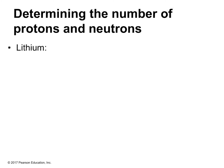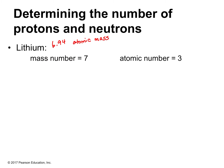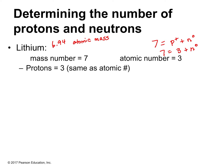Let's determine the number of protons and neutrons. For lithium: lithium's atomic mass is 6.94, so we round that to get a mass number of 7. Lithium has atomic number 3, so we have 3 protons. Using mass number = protons + neutrons: 7 = 3 + neutrons, therefore we have 4 neutrons.